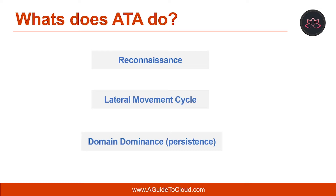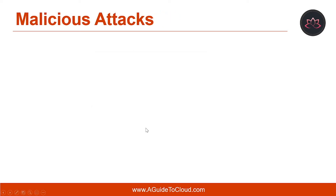ATA searches for three main types of attacks: malicious attacks, abnormal behavior, and security issues and risk. The first known attack type is pass the ticket, or PTT. Pass the ticket is a credential theft and reuse attack that resembles pass the hash in its execution steps. However, it involves the theft and reuse of the ticket granting ticket and ticket granting service acquired using the Kerberos protocol, rather than the NT hash value and NTLM protocol.